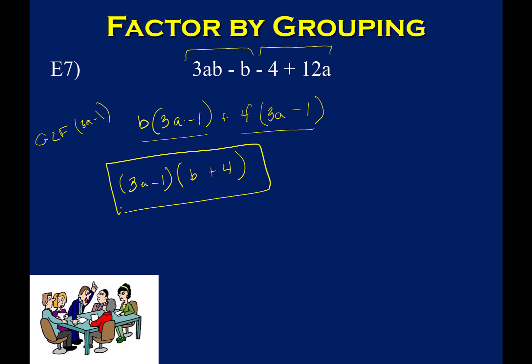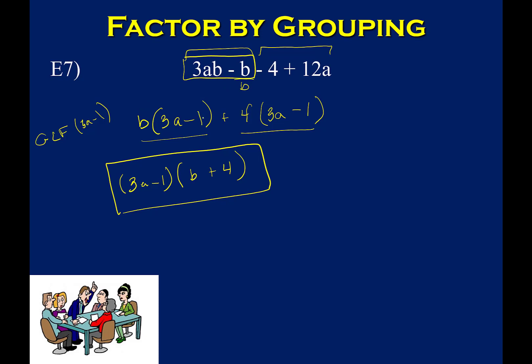One thing I want to point out: when you divide b by b up here, you do get a 1. A common mistake is that students won't write anything because they think the answer is 0 or nothing — but it's not nothing, it's 1. You need that 1 there as a placeholder. If I go backwards — b times 3a and b times minus 1 — I need this 1 to end up with the original negative b. Without it, you can't get the negative b you originally had. When you divide a number by itself, write down 1, not nothing.